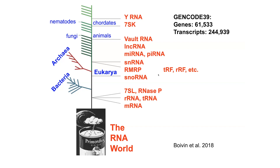It is believed that in the early days of evolution, the primordial life forms are RNA molecules. These RNA molecules have the unique ability to carry genetic information and also fold into complex structures and interactions. This ability of RNA makes them really powerful in modern life.